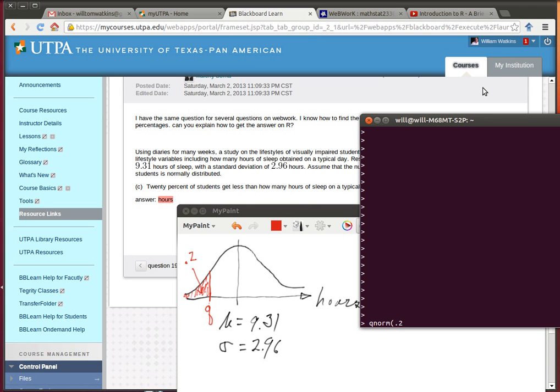Where we want 20% the area. We want the number Q so the 20% of the population is below that Q. And the mean is 9.31 and the standard deviation is 2.96. Okay, there's the result.